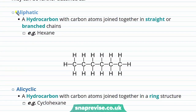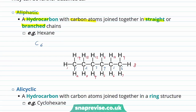The first group is our aliphatic hydrocarbons. These are hydrocarbons with carbon atoms joined together in either straight or branched chains. The example we've got here is hexane. If we have a look at hexane, we can derive its formula. Hexane has 6 carbons, as its name might suggest — the 'hex' suggesting 6. So that's C6. And if we're to count the hydrogens, we would see that there are 14 hydrogens, so that's C6H14.